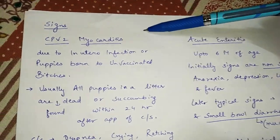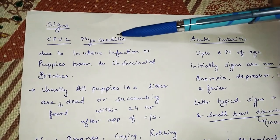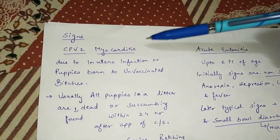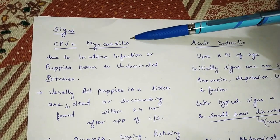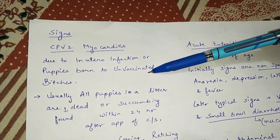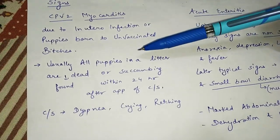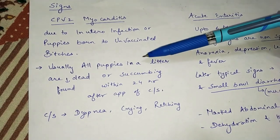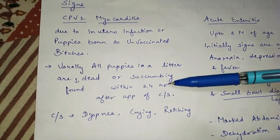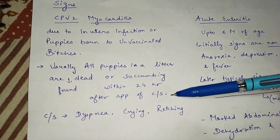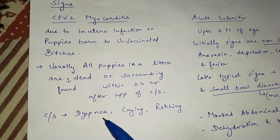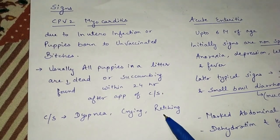Regarding clinical signs: the myocarditis form occurs due to in utero infection or in puppies born to unvaccinated bitches. Usually all puppies in a litter are found dead or succumb within 24 hours after appearance of clinical signs. Clinical signs of the myocarditis form include dyspnea, crying, and retching.